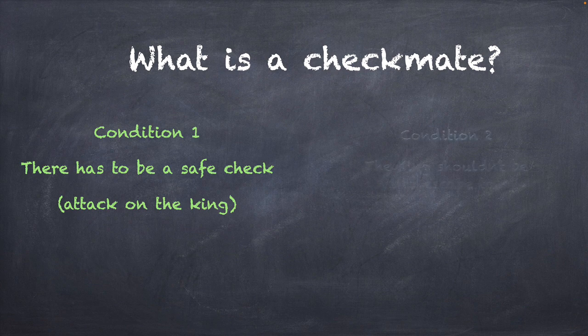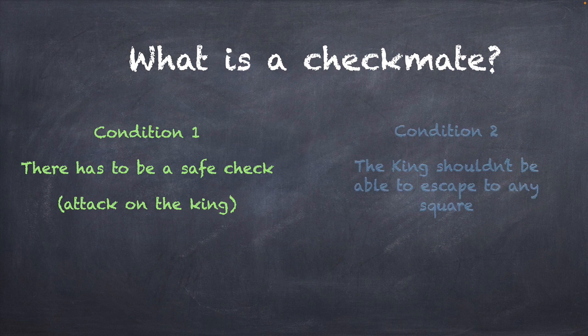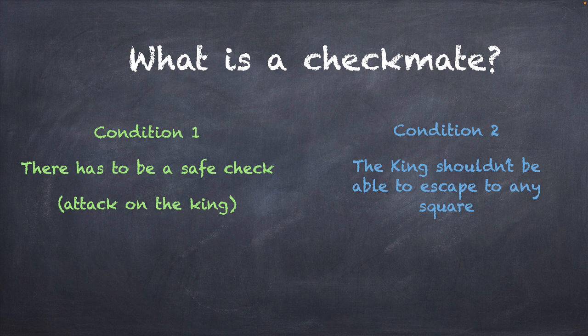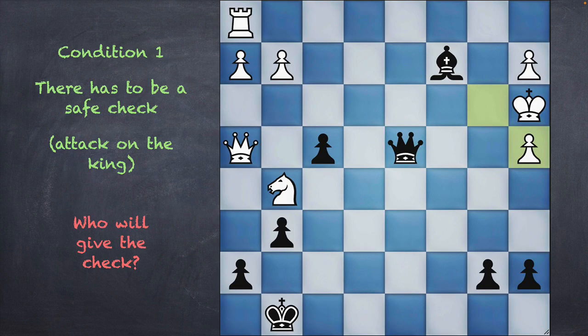The second condition is that on giving that check, the opponent king shouldn't be able to escape to any square. So these are our basic understandings — we've broken down checkmate into these two pieces. Now let's try and apply it.